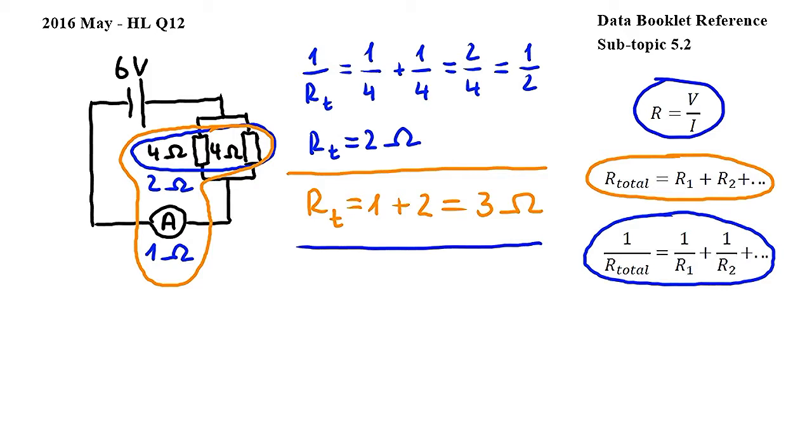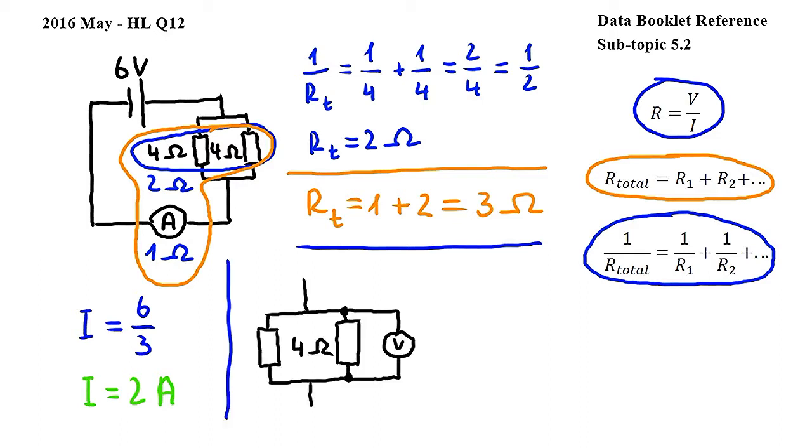Rearranging for I, we get I equals V over R, and substituting our values, we get I equals 6 volts over 3 ohms, which gives us I equals 2 amperes. Let's finally find the voltmeter reading.